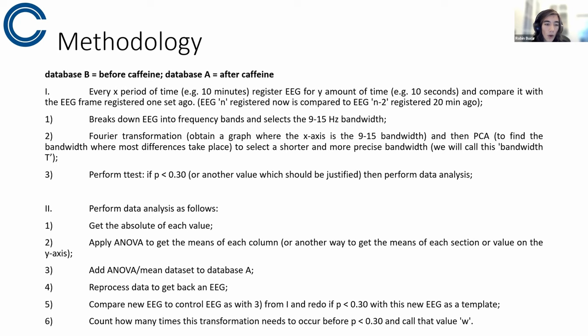Then on these selected bandwidths it would perform a t-test. And if p-value is less than, for example, 0.30, this value would be assessed later, but to be able to catch the caffeine in its more subtle forms, I would include a higher value than 0.05.